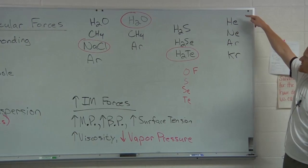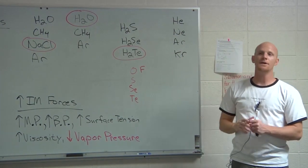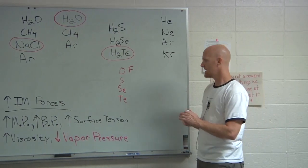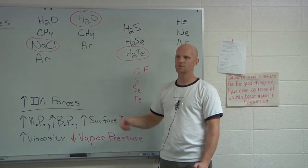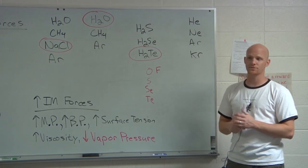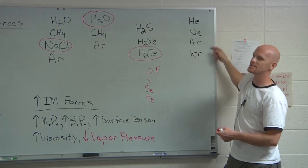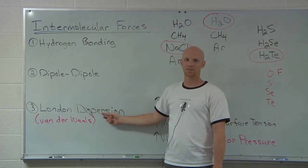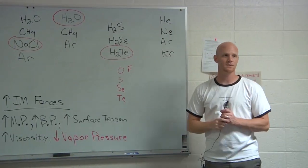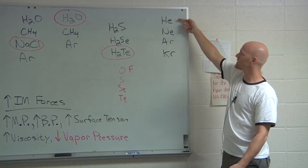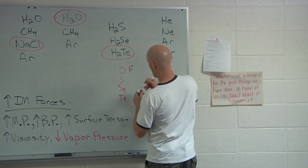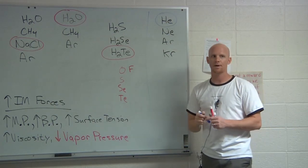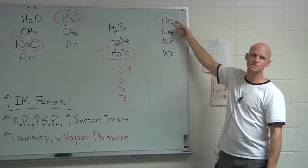Now consider the noble gases going down the periodic table: He, Ne, Ar, Kr. This time I'm asking for the highest vapor pressure. Highest vapor pressure means you want the least amount of intermolecular forces. Do these have hydrogen bonding? Definitely not. Dipole-dipole? No — they're all nonpolar. All they've got is London dispersion. Which one has the least London forces? The smallest one. Based on atomic radius trends, helium is the smallest, so helium has the highest vapor pressure.